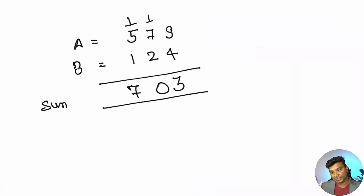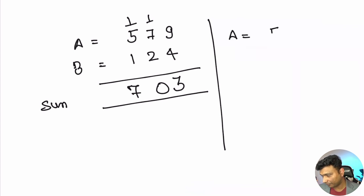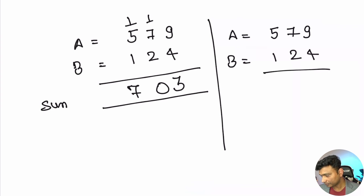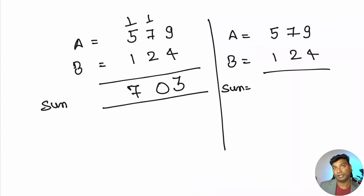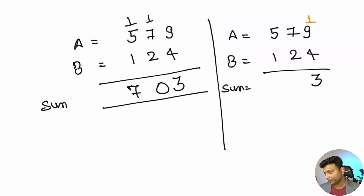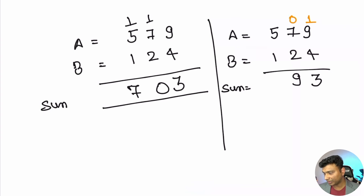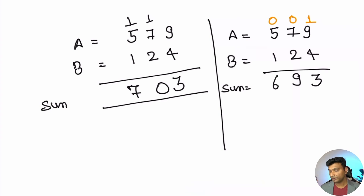Let's do the same in a different way with a as 579 and b as 124. We compute the sum without adding the carry immediately. 9 plus 4 is 13, we write 3 and note carry 1. Then 7 plus 2 is 9, write 9 with carry 0. Then 5 plus 1 is 6, write 6 with carry 0. So our sum is 693 and carry is 001.